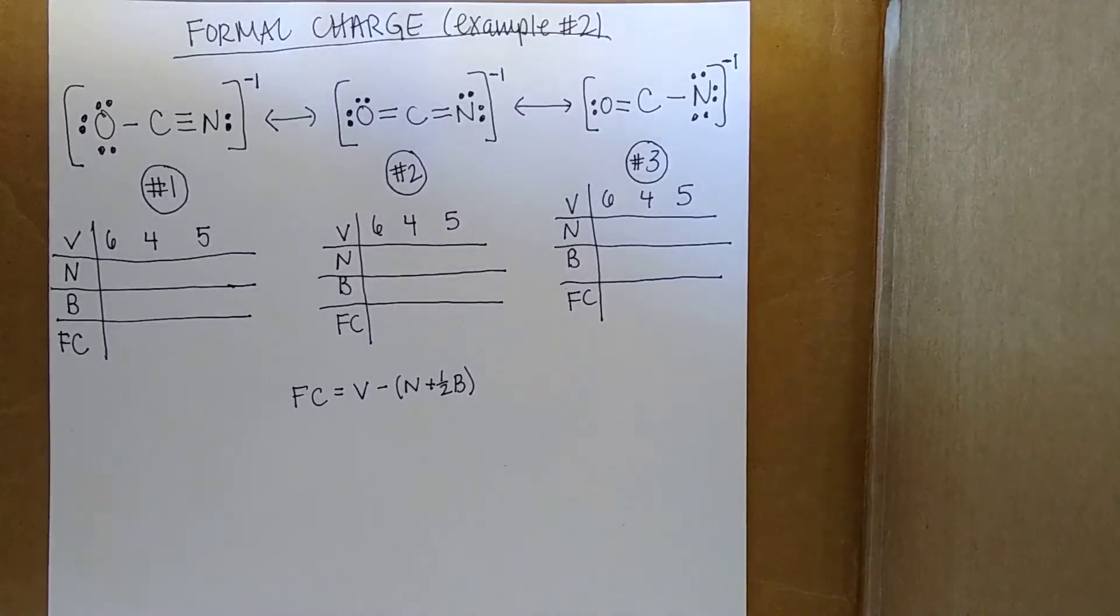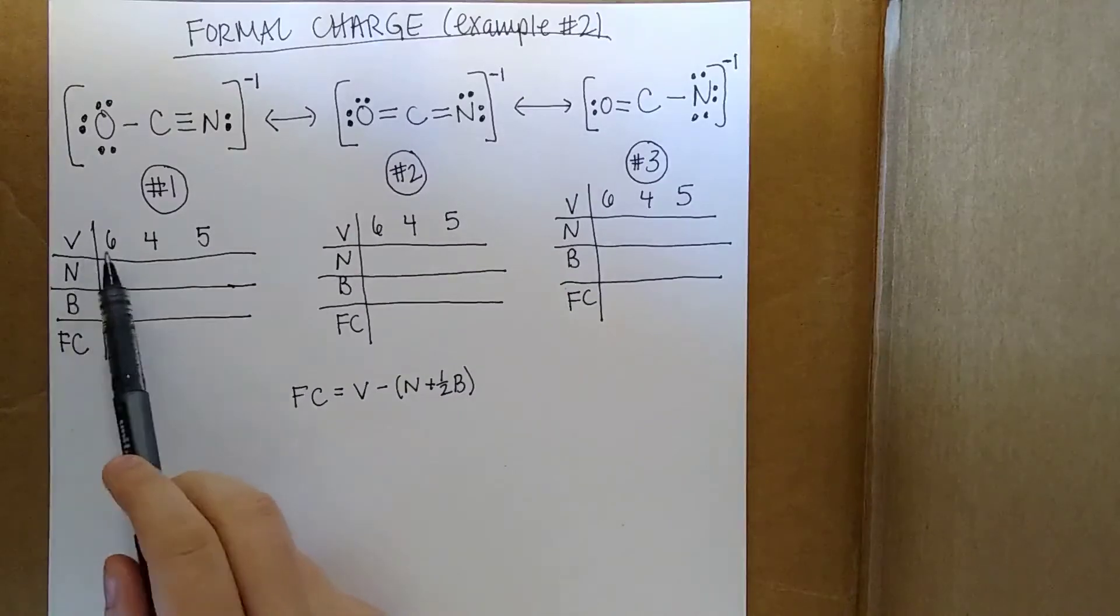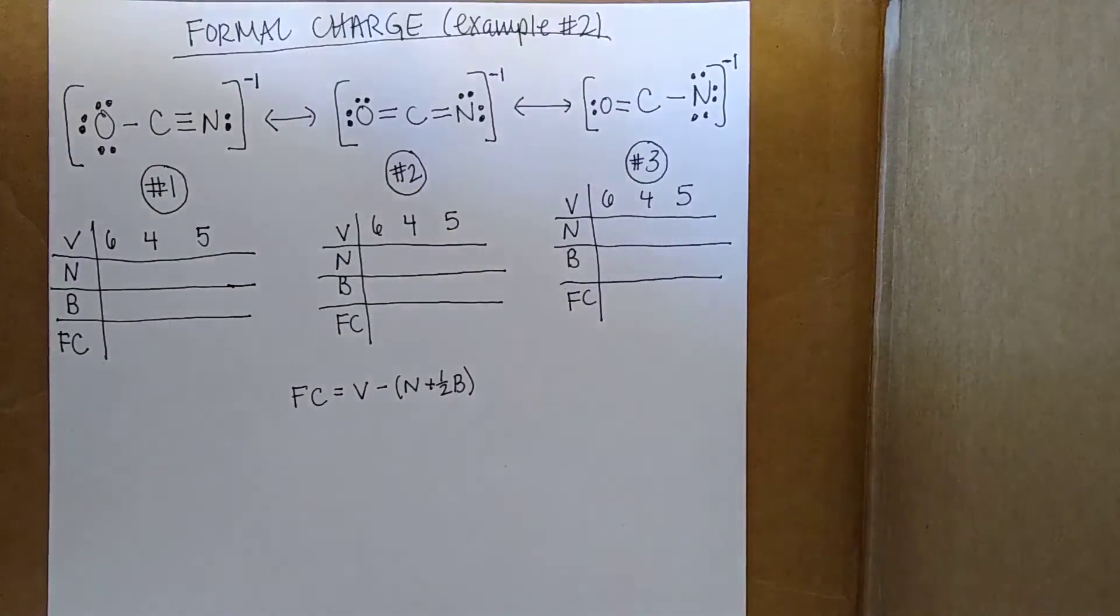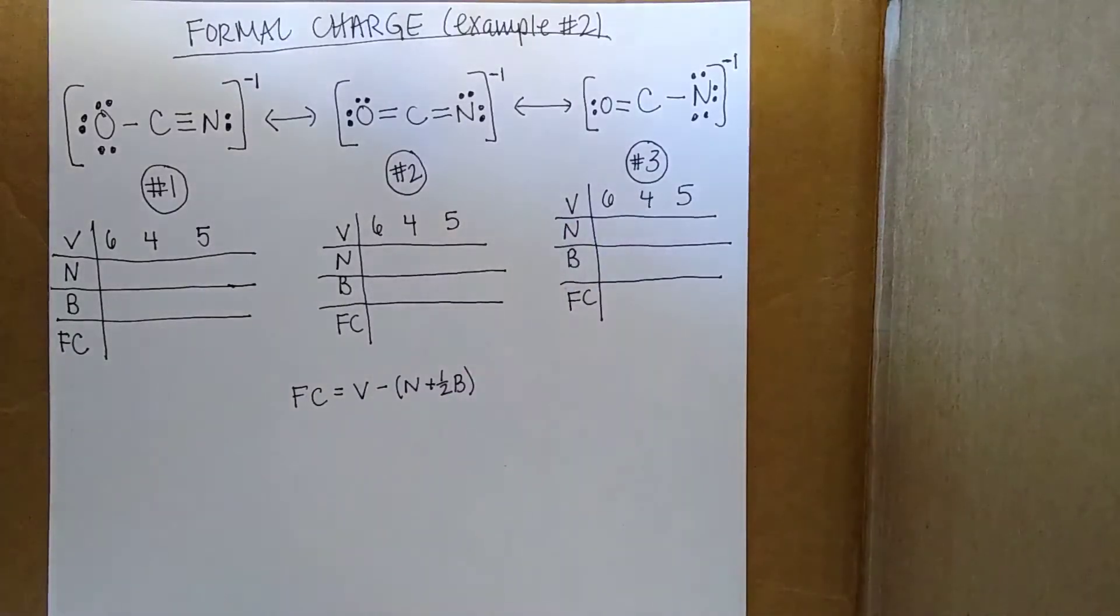I've already filled in some of the information for each one of them, notably their valence electrons. These come from the periodic table. I've also labeled them 1, 2, and 3, so it's easy to distinguish them.